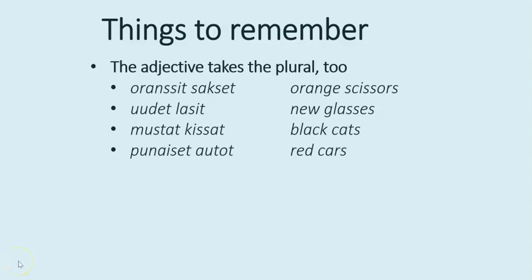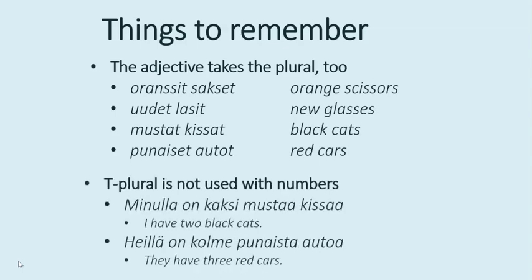Another thing to remember is that we don't use T-plural after numbers. If you want to say 'I have two black cats,' you use the partitive: minulla on kaksi mustaa kissaa. Or 'they have three red cars': heillä on kolme punaista autoa. In these cases we use the partitive case — we'll learn more about that in upcoming videos.